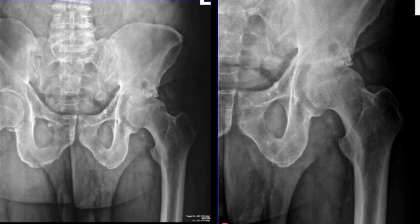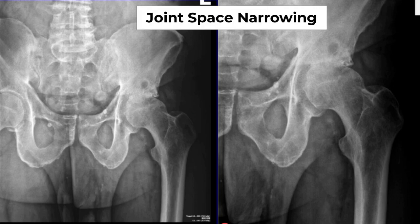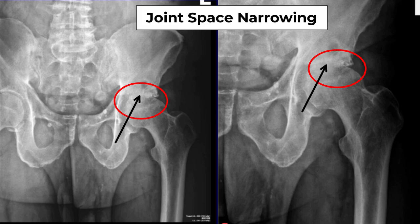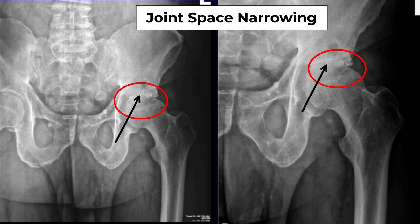The first thing we look for is joint space narrowing. On this x-ray, you can see that there is no more joint space and the bones are directly in contact with each other. This is what we call bone-on-bone osteoarthritis.